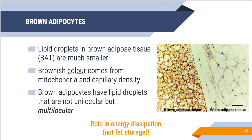Brown adipocytes have lipid droplets that are much smaller than in white adipose tissue, and the brownish color is produced by a high number of mitochondria and capillary density, meaning there's vascularization and blood flow to these tissues. Brown adipose tissue is multilocular — multiple cavities of triglyceride storage. Importantly, brown adipocytes play a role in energy dissipation: using an uncoupling protein to make heat instead of ATP, whereas white adipose tissue plays primarily a role in triglyceride storage.